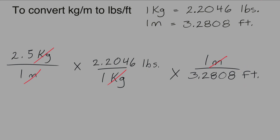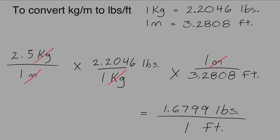So all we have left to do is the math. If the number is on the top we multiply it; if the number is on the bottom we divide it. The ones can be ignored, since a number times one or divided by one leaves you with the same number. So 2.5 multiplied by 2.2046 and then divided by 3.2808 equals 1.6799 pounds per foot.